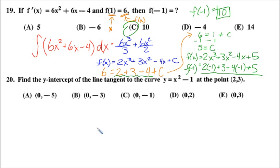Number 20, again as I mentioned, is going to involve a little bit of calculus. Find the y-intercept of the line tangent to the curve y = x² - 1 at the point (2, 3). The reason we need calculus is whenever we see the line tangent to a curve, that deals with the first derivative.